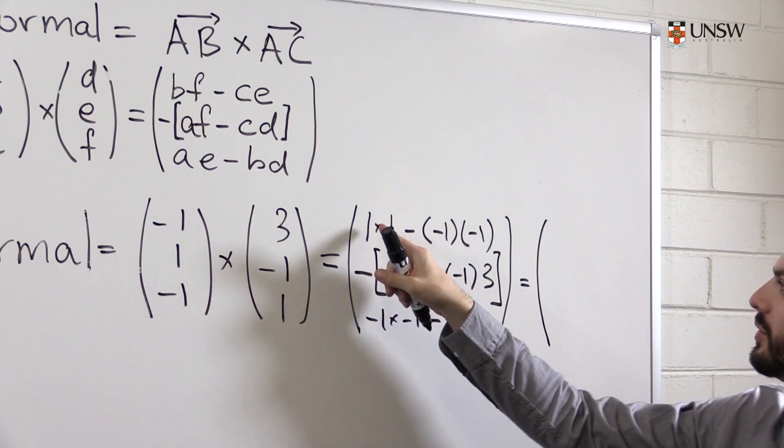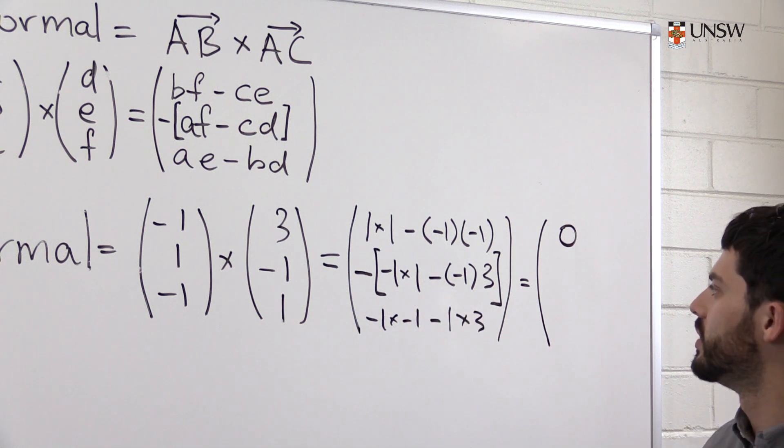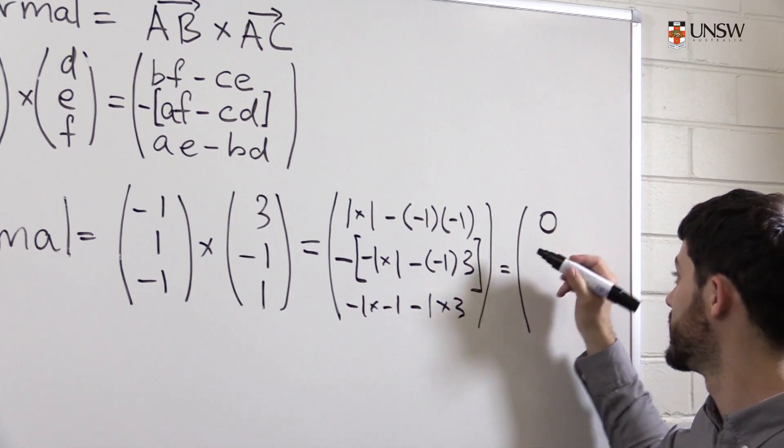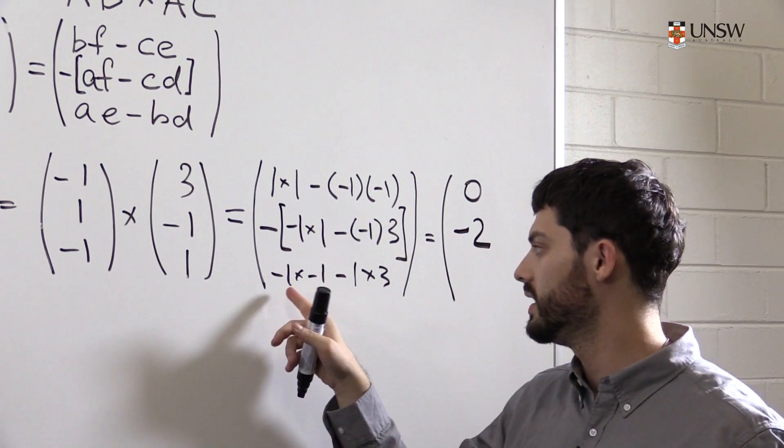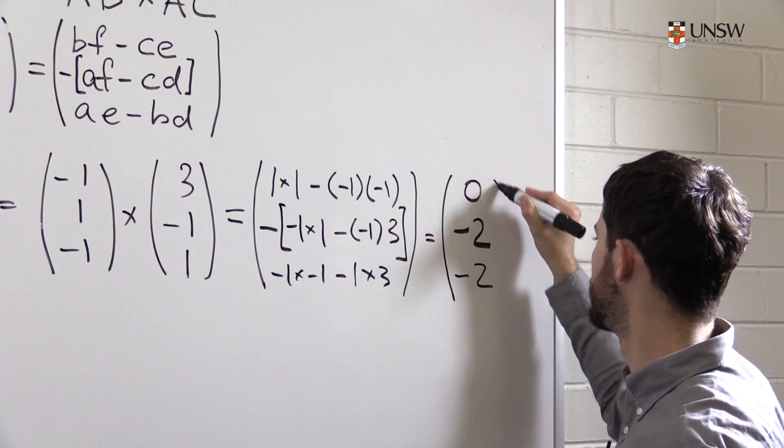To get the first row, we do one times one minus one. So we're going to get zero. Here we have minus one plus three, which is two. But then there is an extra minus sign. So we get minus two. And here we have one minus three. So again, minus two.